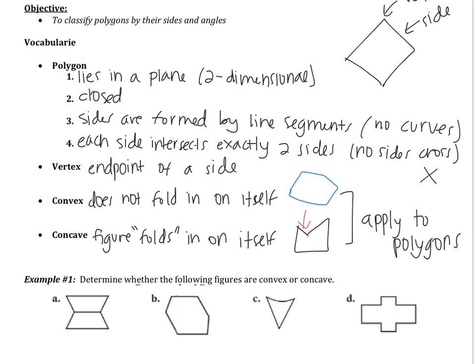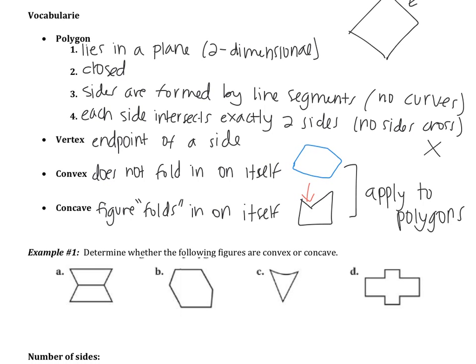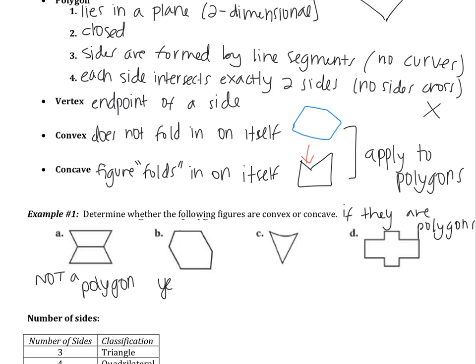So in example one, it says determine whether the following figures are convex or concave. I'm going to add on if they are polygons. So if we look at A, the first thing you can say about A is that it's not a polygon. A is not a polygon, so it can't be convex or concave. Looking at B, is B a polygon? Well, it's two-dimensional, it's closed, it has no curves and no sides crossed. So B, we're going to say yes, a polygon.